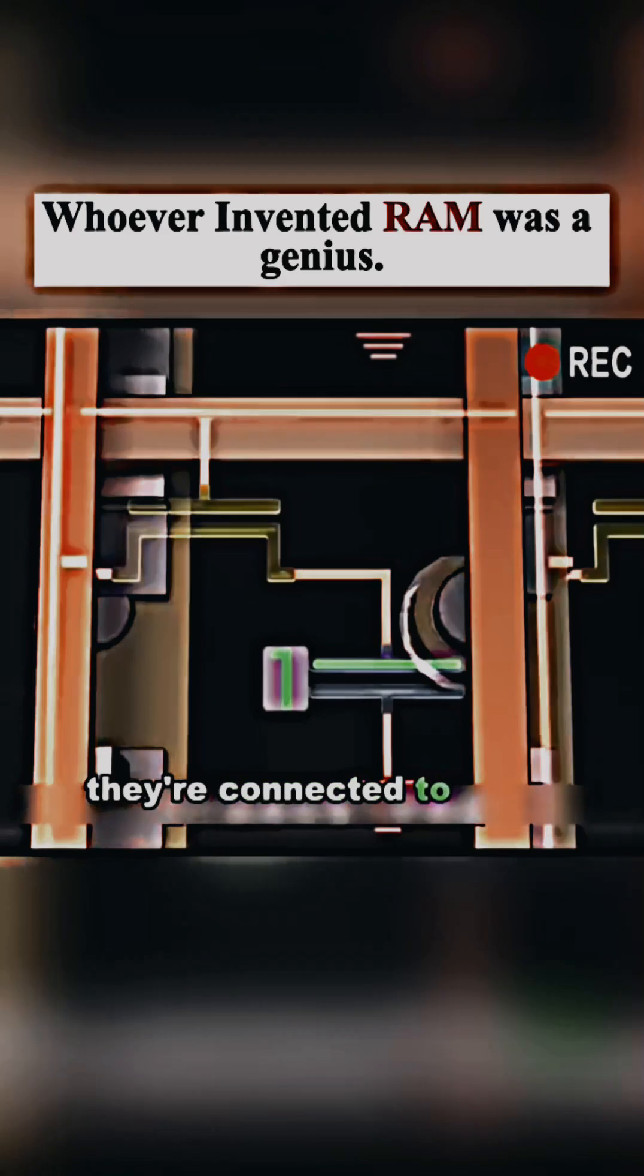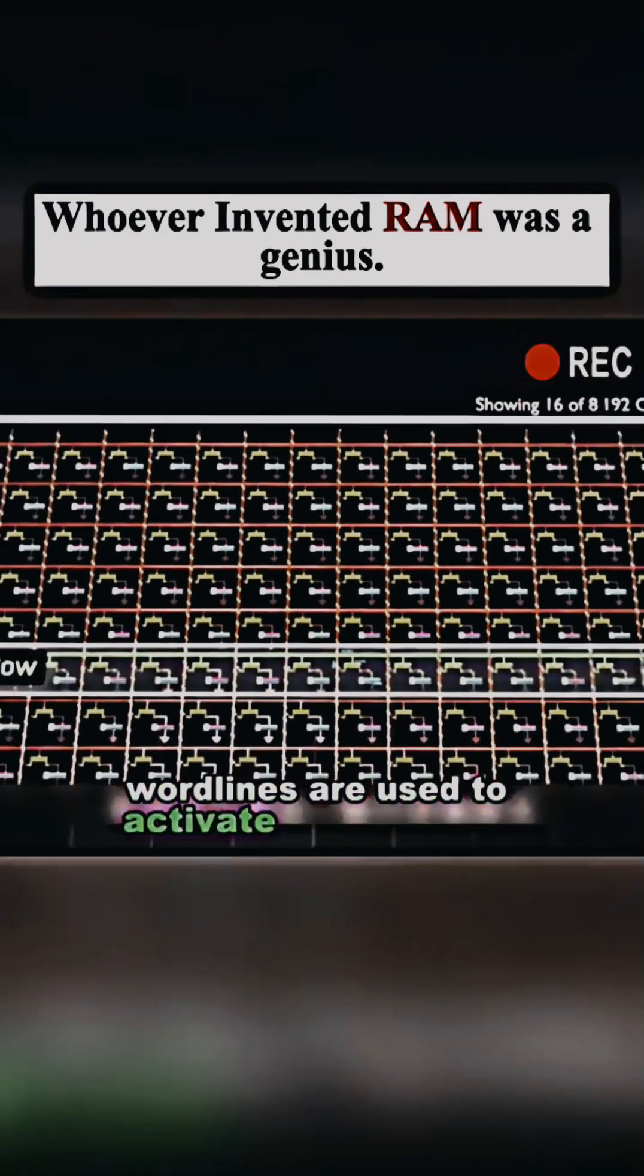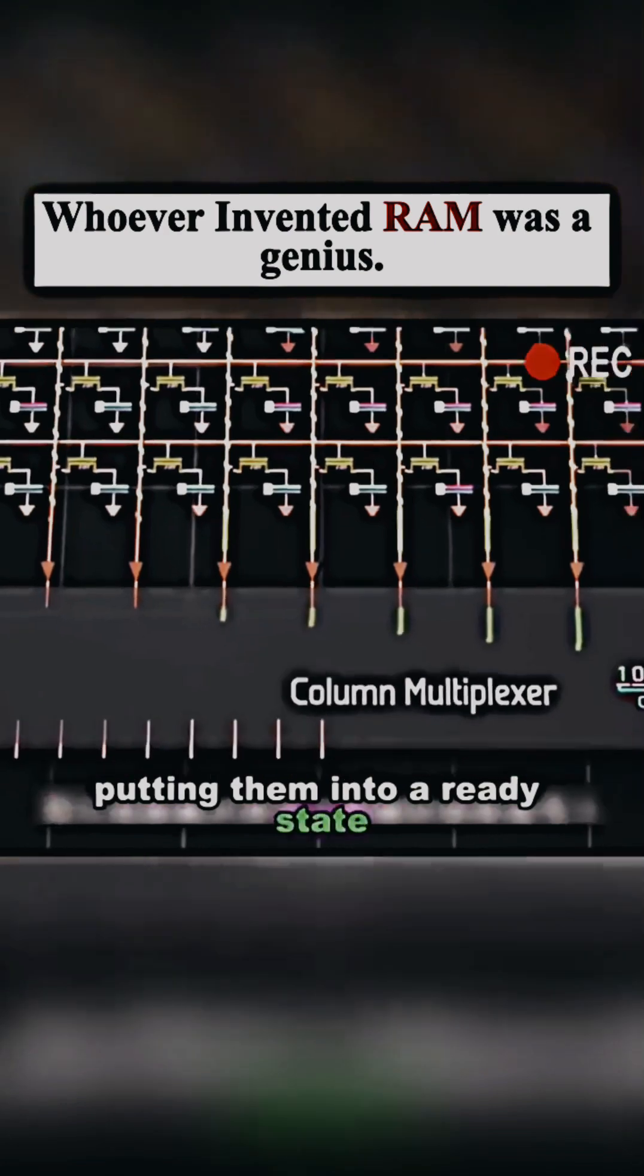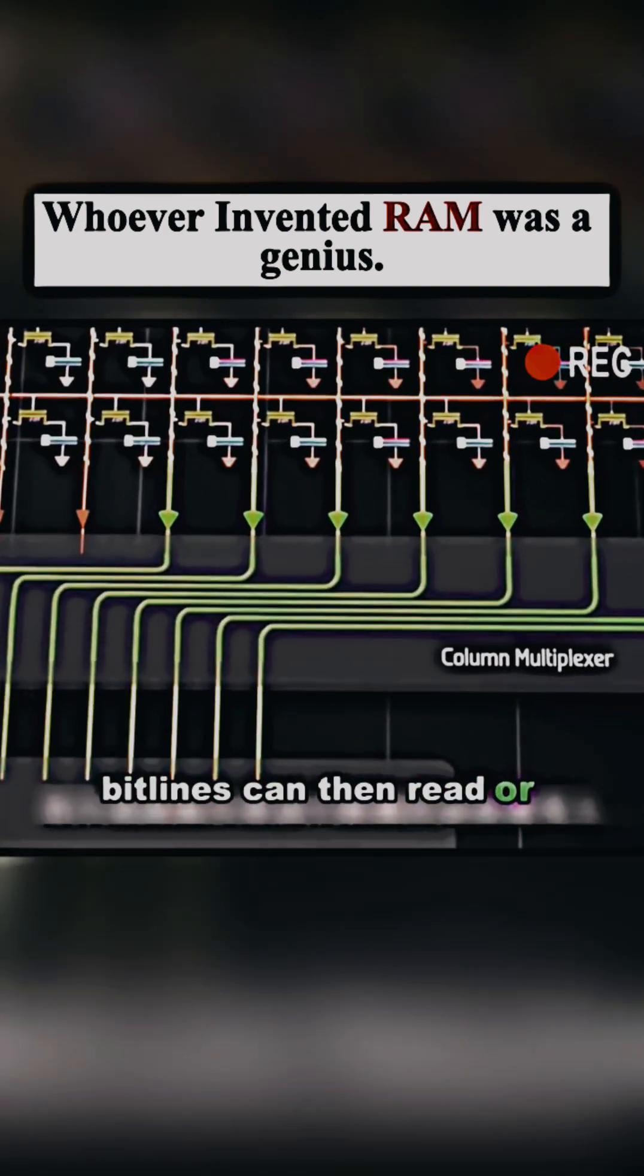They're connected to each memory. Word lines are used to activate an entire row of memory cells, putting them into a ready state. Bit lines can then read or write data to them.